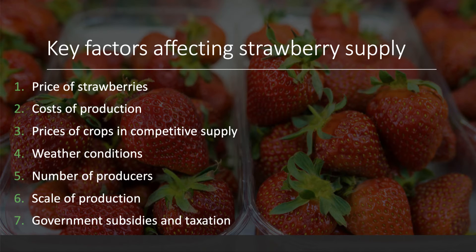Now the supply side. I'm going to take you through seven factors that could impact on supply to the market — supply from growers that eventually finds its way to retail level. One: the price of strawberries itself. Two: cost of production. Three: the price of crops in competitive supply. Four: weather conditions and climate. Five: the number of producers in the market. Six: the scale of production. And seven: government intervention through subsidies and taxation.